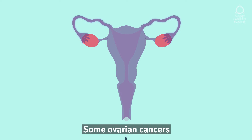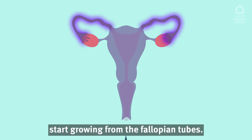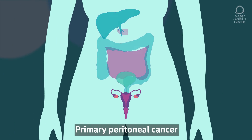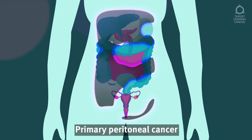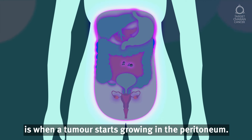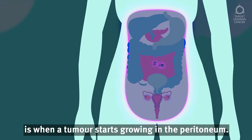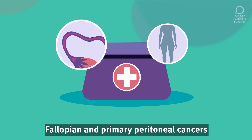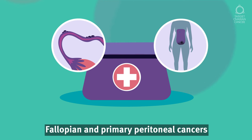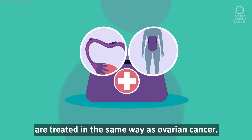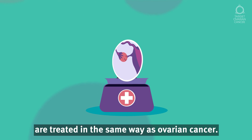Some ovarian cancers start growing from the fallopian tubes. Primary peritoneal cancer is when a tumour starts growing in the peritoneum. Fallopian and primary peritoneal cancers are treated in the same way as ovarian cancer.